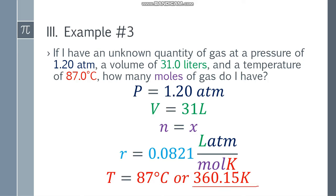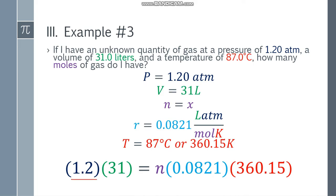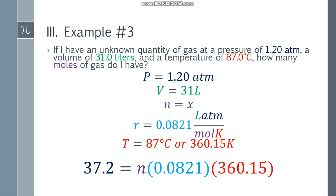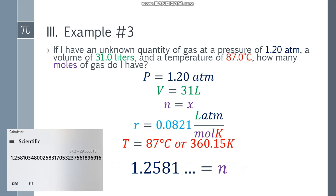Gamitin natin yung formula. PV is equal to nRT. Substitute the values, and we have 1.2 times 31. At yung sa kanan naman, that will be n. Color-coded naman siya guys. 0.0821. Multiply mo siya sa 360.15. Sa Kelvin dapat. Huwag sa Celsius. Simplify both sides. 1.2 times 31, that will be 37.2. At yung sa kanan naman, that will be 29.568315N. Wala akong may round up or round down dyan. Kinomplete ko muna. Divide both sides by 29.568315 para makuha yung value ni n. N will become like this one. Sa calculator.